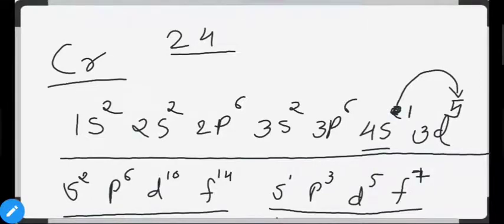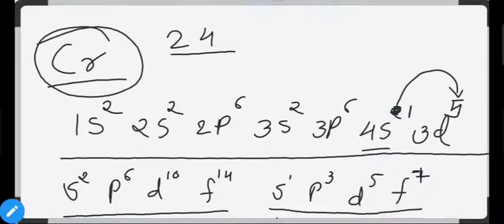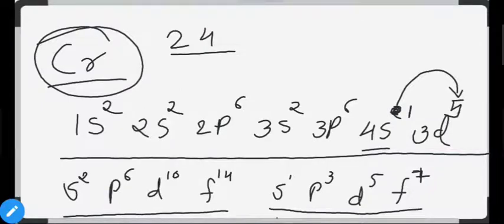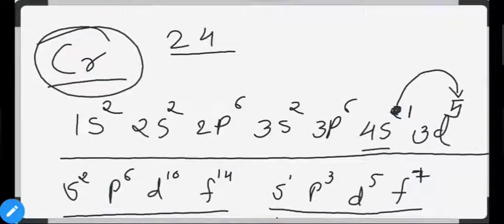The same phenomenon occurs for copper — one electron from 4s jumps to 3d, making 3d fully filled for extra stability. This gives the exceptional electronic configurations of both chromium and copper.